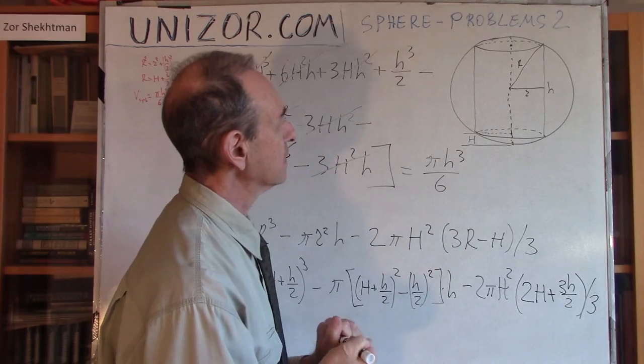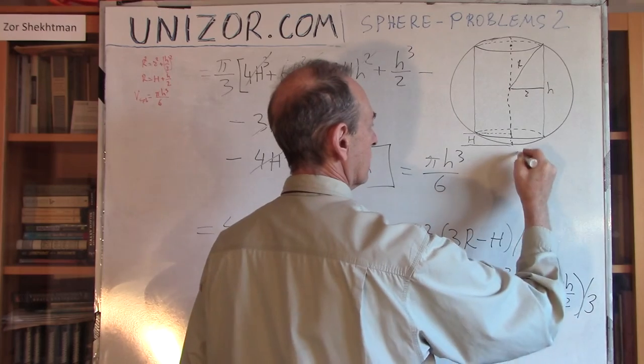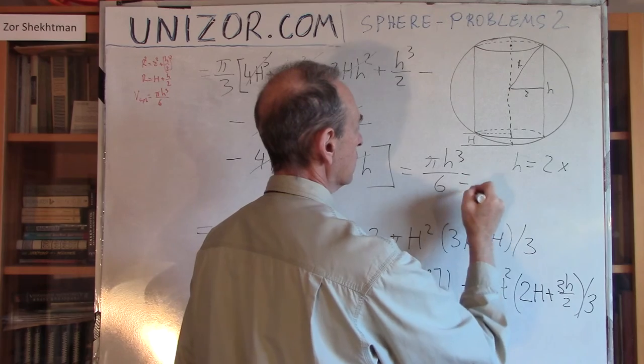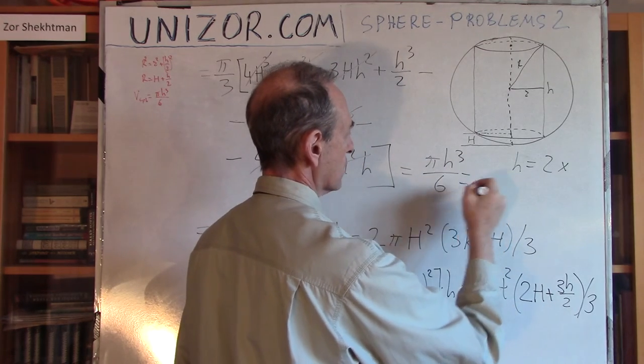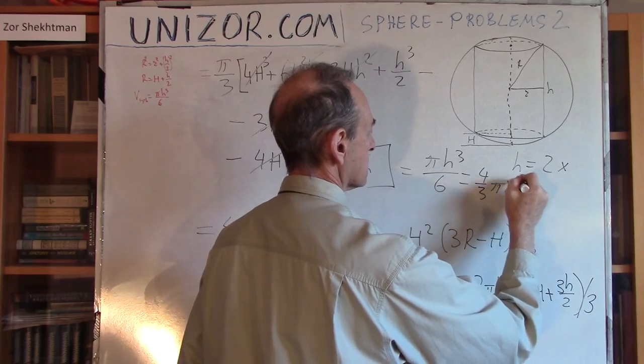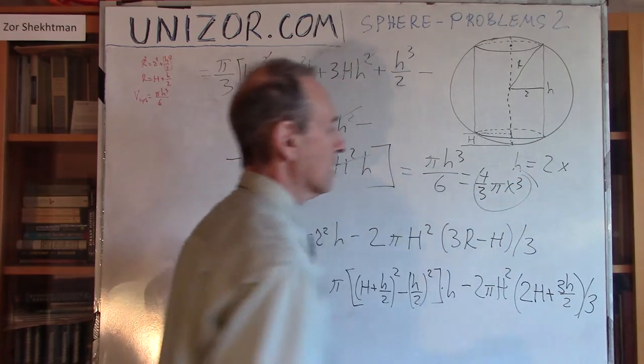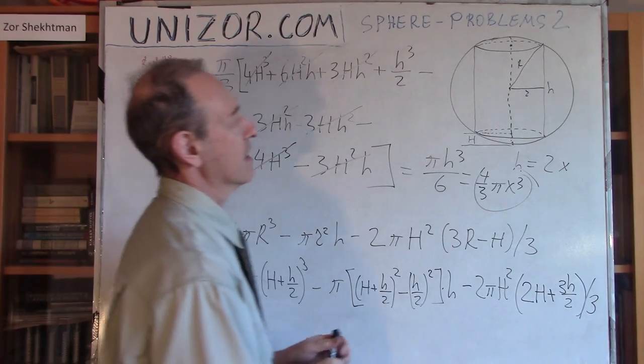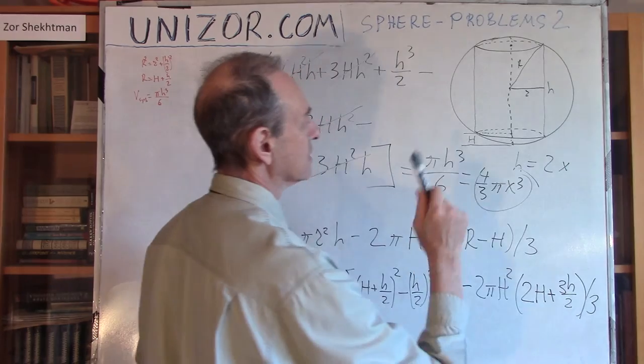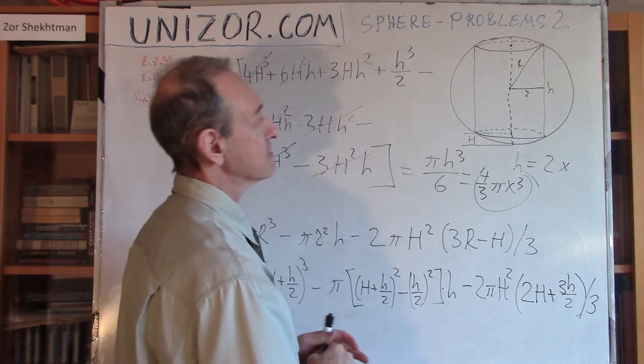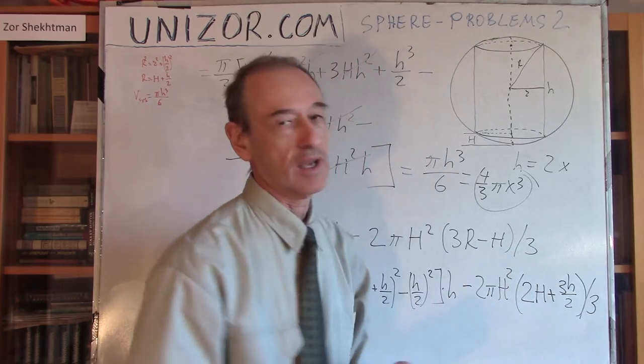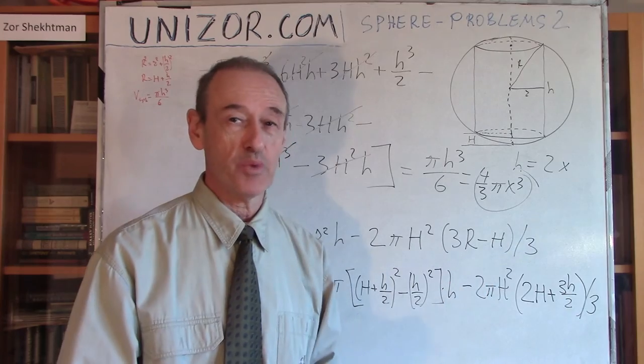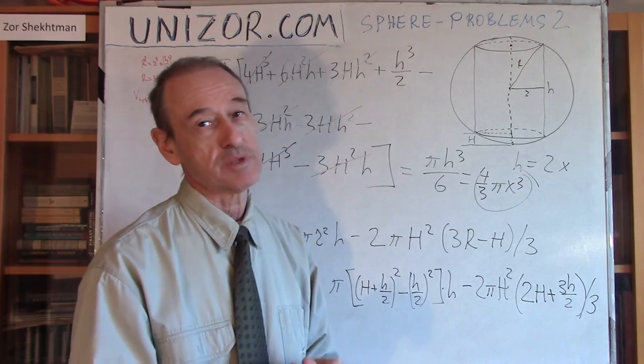If instead of h, you would put, let's say, 2x. What this formula would look like, it would be 8 over 6. So, it's 4 third pi x cube. Now, this is a formula for the volume of a sphere. So, basically, what it says is that the remaining part would be exactly equal in volume to a volume of a sphere with a radius equal to half of the height of the cylinder. Strange. I don't know how it happens and why. I cannot explain it. But I think it's an interesting observation. Alright?